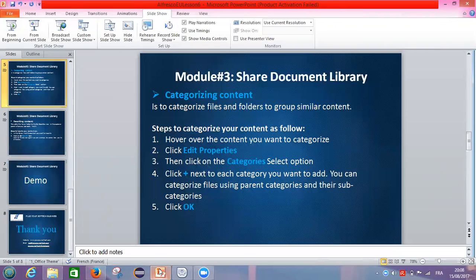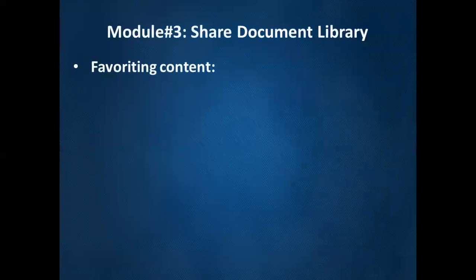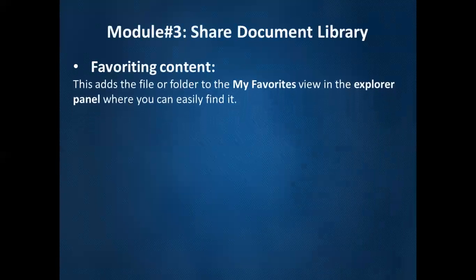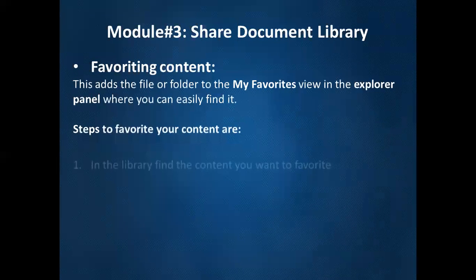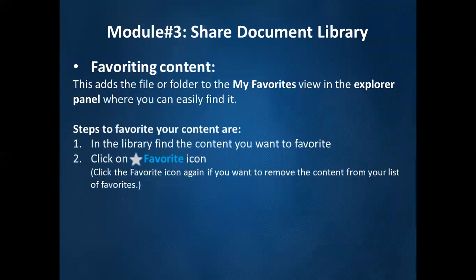The last topic now is about favoriting content. How can we favorite our content? This adds the file or folder to the 'My Favorites' view in the explorer panel, where you can easily find it. Steps to favorite your content: in the library, find the document you want to favorite. Click on the favorite icon. Click the favorite icon again if you want to remove the content from your list of favorites. It's very easy — just follow the steps.